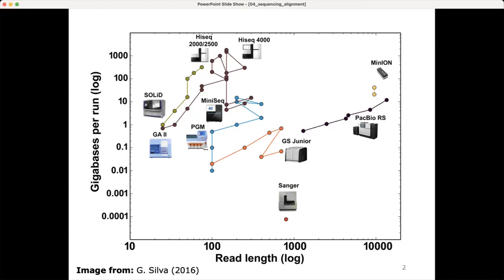In orange we see 454 sequencing, which I don't think is used anymore. On the right side, with longer read length, we see PacBio sequencing and Oxford Nanopore technology. This is an image from 2016, and things have changed since then, especially for the long read sequencers. Illumina has introduced machines with even higher throughput than they had in 2016.